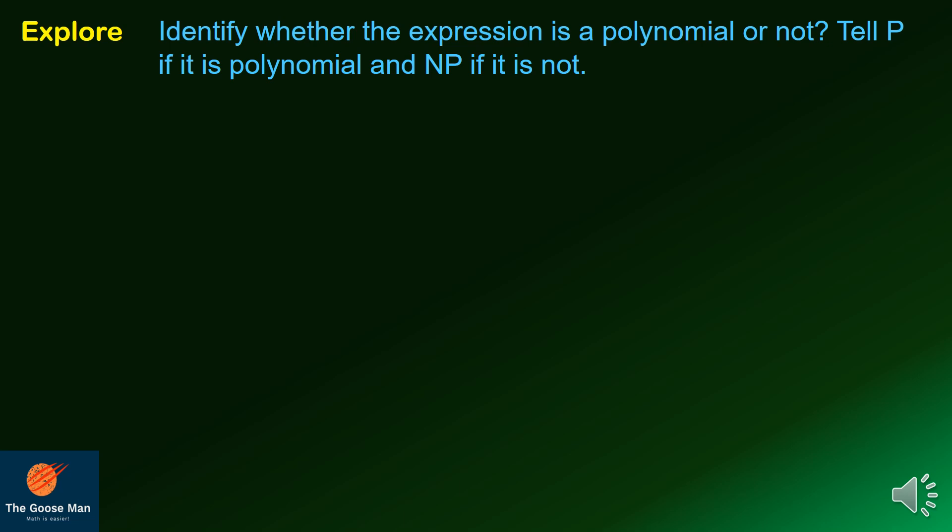Before we proceed to our topic, let us identify whether the following expression is a polynomial or not. Tell P if it is a polynomial and NP if it is not. Number one: x plus 3 — this is a polynomial.